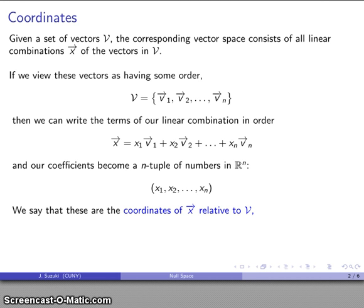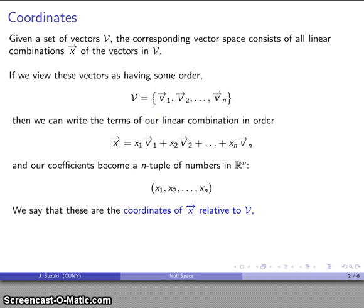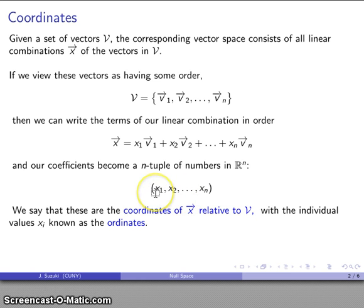We have a special name for this: we call these the coordinates of x relative to V, and the individual values are the ordinates.